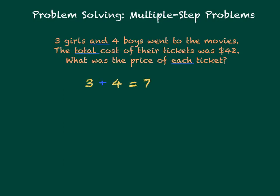Three girls and four boys went to the movies. The word AND tells me that I need to put those together, which would make it an addition problem. So three plus four equals seven — seven kids went to the movies.